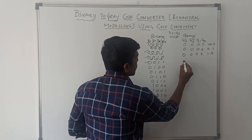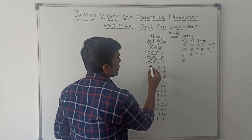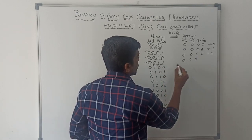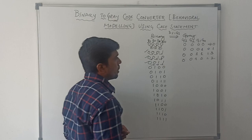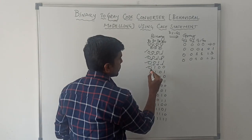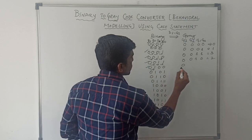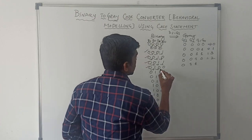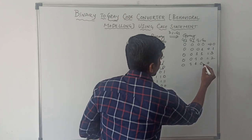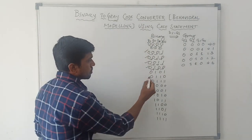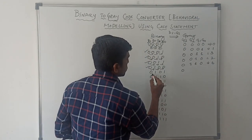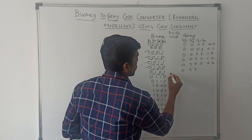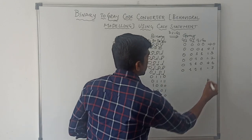For the fourth input 0011: MSB takes the same value 0, 0 XOR 0 is 0, 0 XOR 1 is 1, 1 XOR 1 is 0 — gray code value is 2. For input 0100: after conversion the result is 6. For input 0101: 0 XOR 1 is 1, 1 XOR 0 is 1, 0 XOR 1 is 1 — the result is 7.